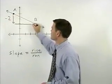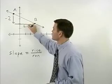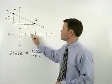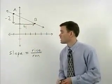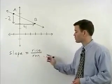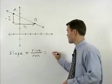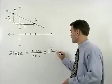Our run is four units, one, two, three, four. So our slope or rise over run is negative two over four.